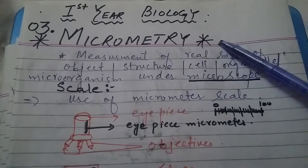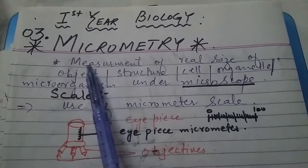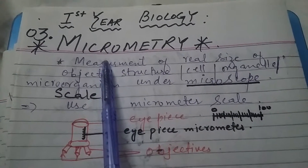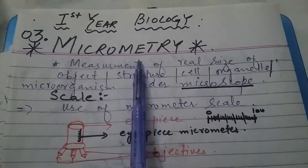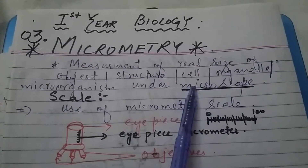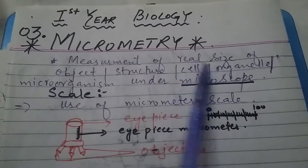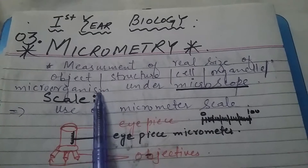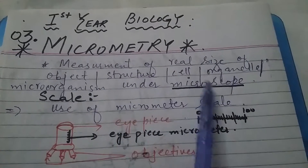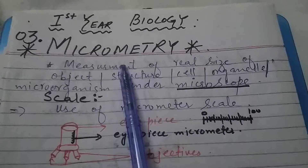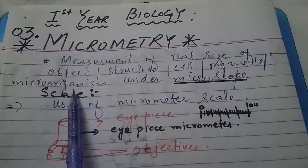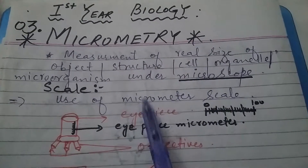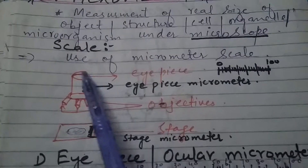One of these techniques is micrometry. As the word indicates, micro means very small in size. Objects which cannot be seen with the naked eye — we can measure their real size with the help of a microscope. This type of measurement, in which we measure the real size of objects, organelles, cells, and even microorganisms under the microscope, is known as micrometry. The scale used in this technique is the micrometer scale, and measurements are in micrometers.